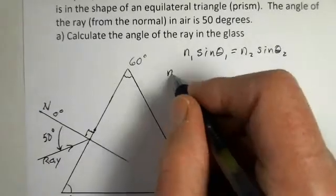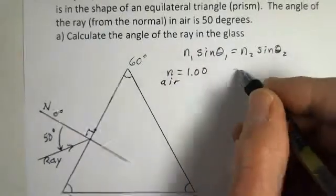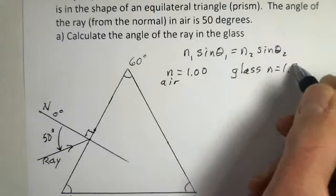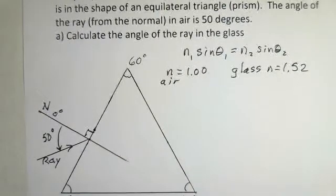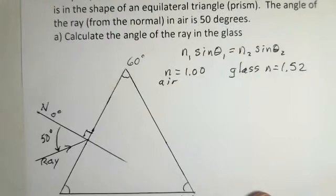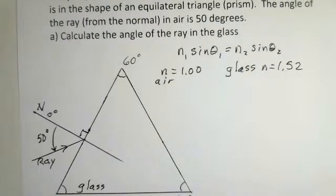We're going to say air has an index of refraction of 1, and the glass has an index of refraction of 1.52. And if you had a different type of glass, some special glass, that might be a different number. If it's diamond, it's a much different number. But let's use these values.